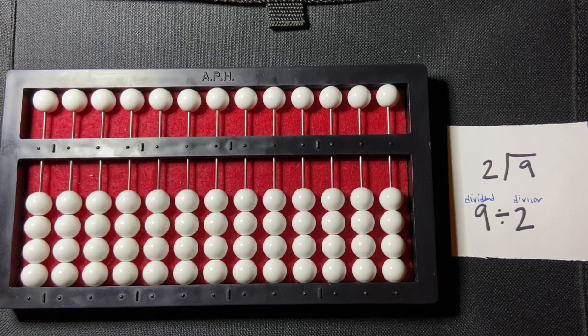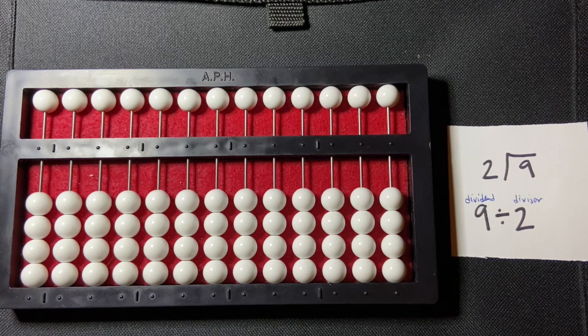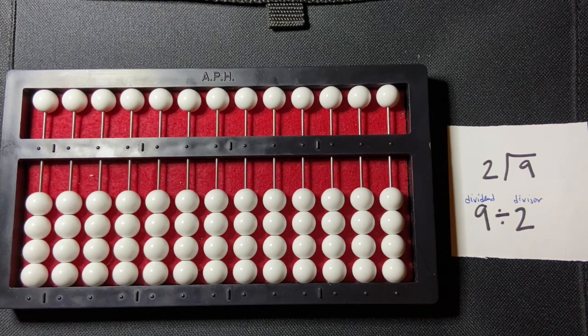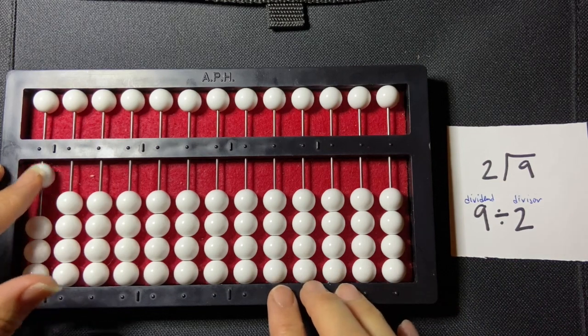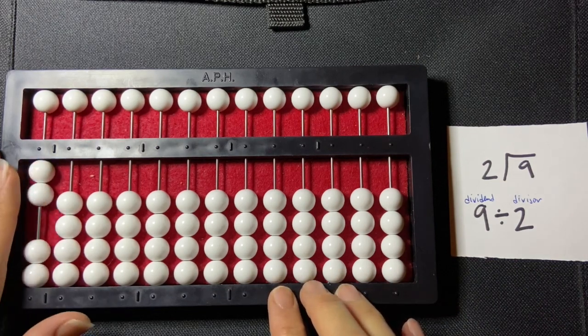I'm going to be doing a counting method with remainder for division and so I'm going to start my problem by writing my divisor on the far left-hand side of my abacus. The divisor is 2 so I'm going to set 2, 1, 2 on the far left-hand side.